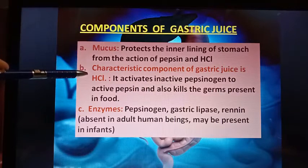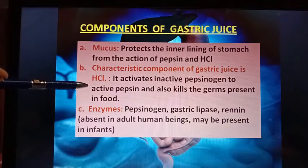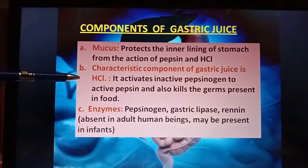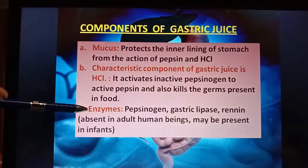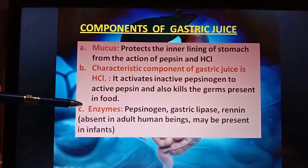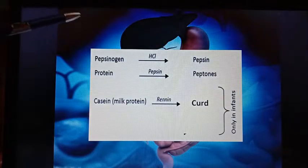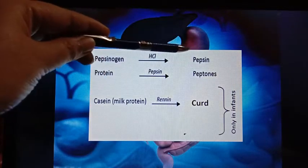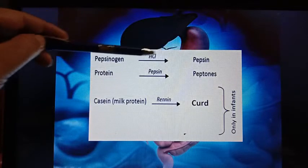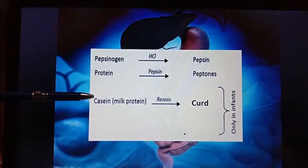Hydrochloric acid (HCl) activates the inactive pepsinogen to active pepsin, and also kills the germs present in food. HCl provides an acidic medium for the action of the enzymes. The enzymes present are pepsinogen, gastric lipase, and rennin for infants. Pepsinogen is converted to active pepsin by the action of hydrochloric acid, then this pepsin acts on protein molecules and converts them to peptones.